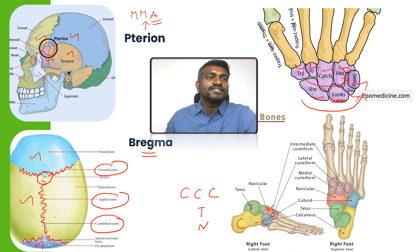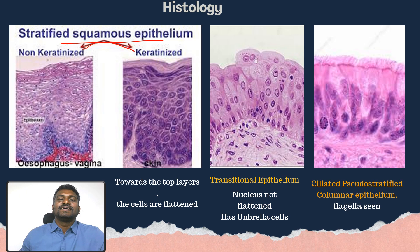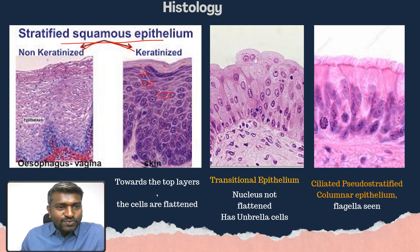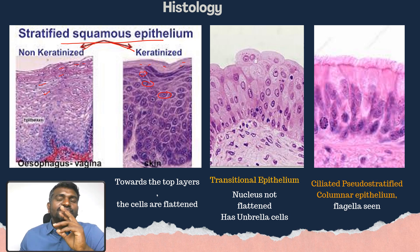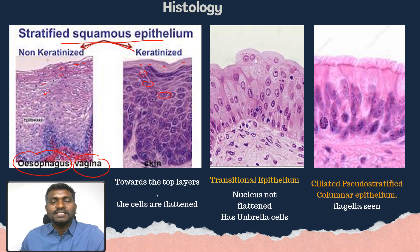Let's look at stratified squamous epithelium, classified into keratinized and non-keratinized. In keratinized epithelium, the nucleus becomes more flattened going toward the top layer — we can hardly see the nucleus there. In non-keratinized, the nucleus is still visible on the top layers. Non-keratinized is seen in the esophagus and vagina, while keratinized is seen in the skin.